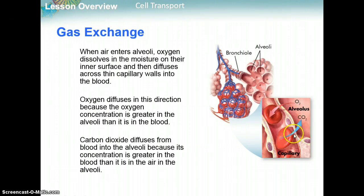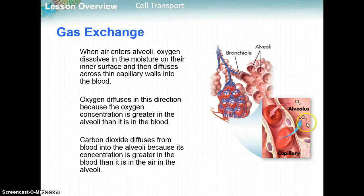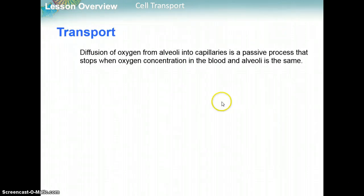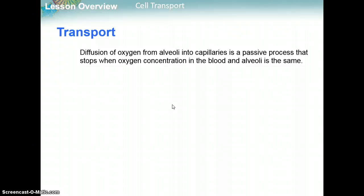The same idea applies to carbon dioxide. Why does CO2 go into the alveolus? In low-oxygenated red blood cells, there is a high concentration of carbon dioxide that will naturally, passively move into the alveolus, which has a low concentration of carbon dioxide. This idea of diffusion from high to low is key for how your circulatory and respiratory systems interact. This passive process stops when the oxygen concentration in the blood and alveoli are the same — when equilibrium is reached.